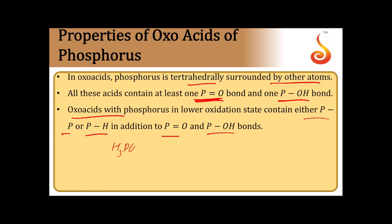In oxo acids where phosphorus is in a lower oxidation state, the molecule will have either a P-P bond or a P-H bond in addition to the P=O and P-OH bonds. For example, in H3PO3, phosphorus has one P=O bond, two P-OH groups, and one hydrogen directly bonded to phosphorus — a P-H bond — indicating a lower oxidation state of +3.